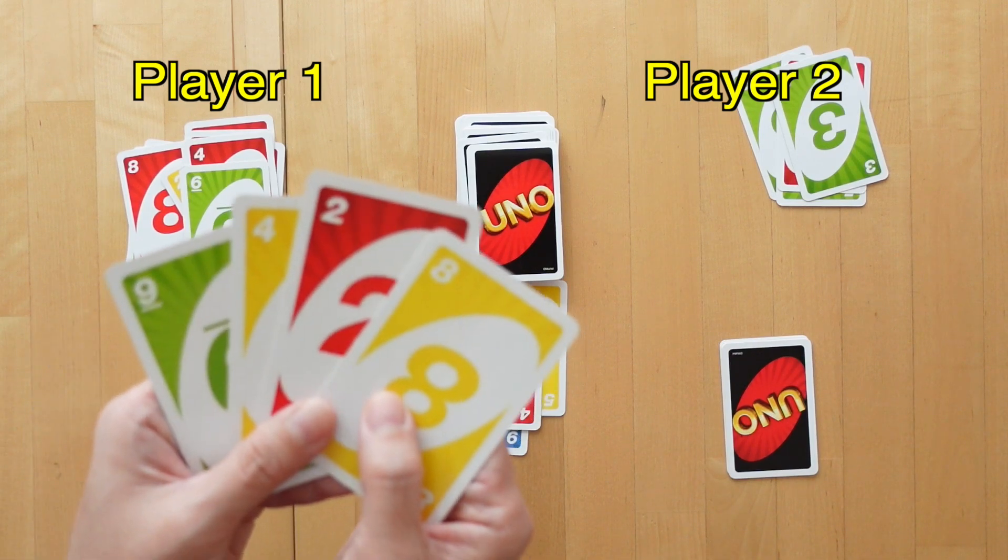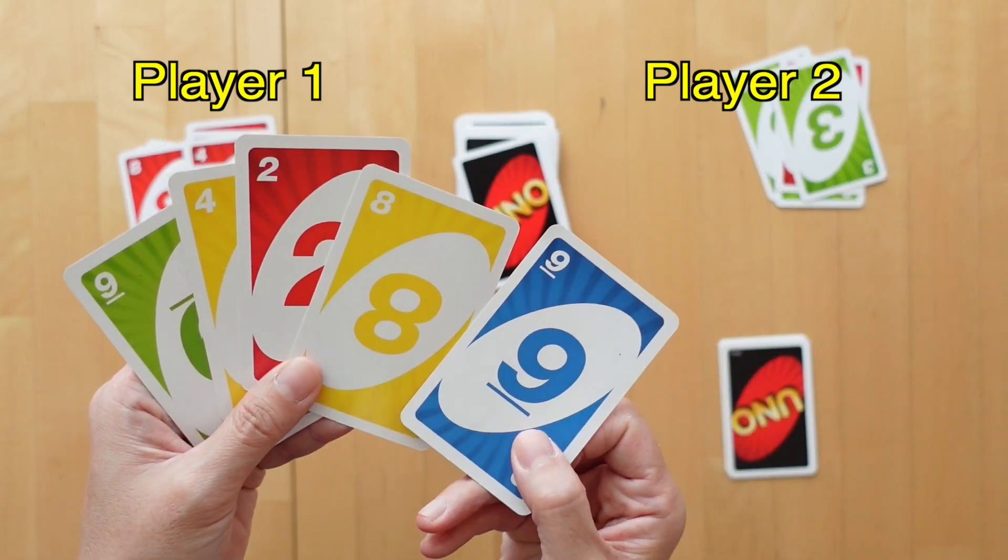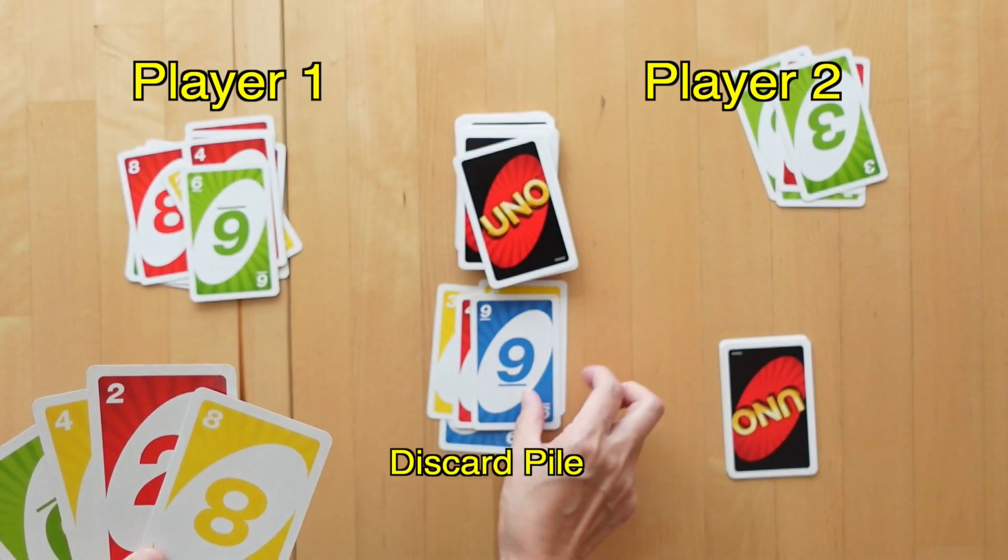Now what can player 1 do? She's going to pick a card from the draw pile. A 9. Still no 20, so I'll discard that.